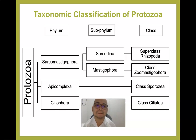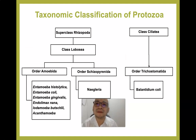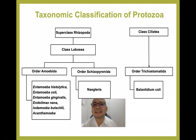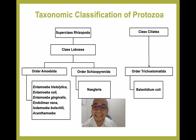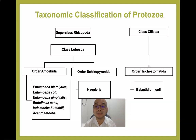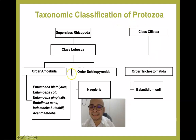The superclass Rhizopoda is divided into Globosea, with two orders: Amoebida and Schizopyrenida. Under Amoebida we have Entamoeba histolytica, Entamoeba coli, Entamoeba gingivalis, Endolimax nana, Iodamoeba butschlii, and Acanthamoeba. Under Schizopyrenida we have Naegleria. Among these, the pathogenic organisms are Entamoeba histolytica, Acanthamoeba, and Naegleria.